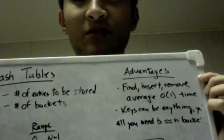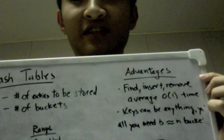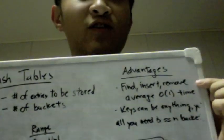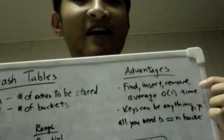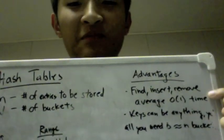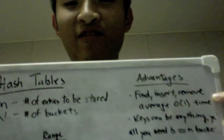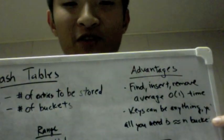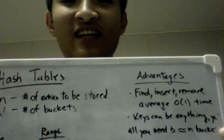The main advantages of hash tables over arrays and linked lists are the following. First, find, insert, and remove, the three main operations of hash tables, take on average constant time, which is much better than what linked lists have, which is linear time.